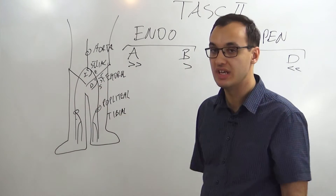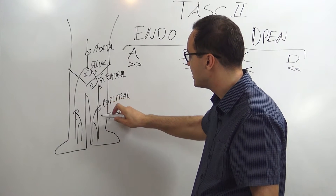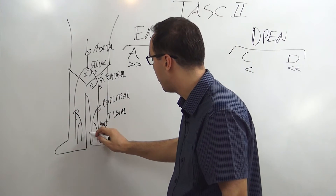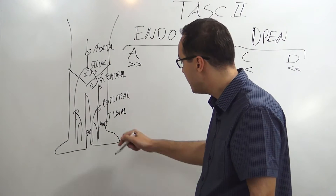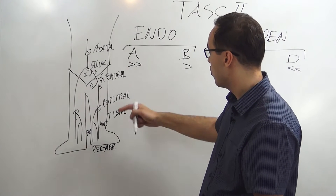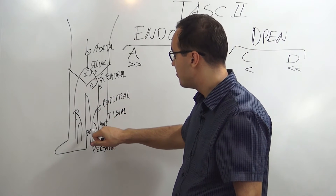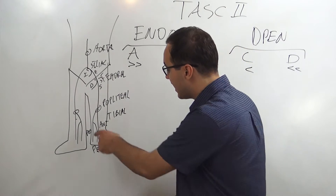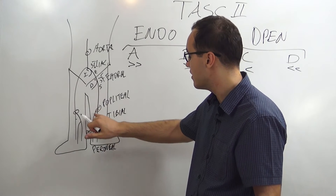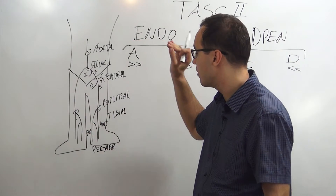The key difference between iliac and femoral naming is that instead of internal and external as in the iliac, the femoral has deep and superficial. Then coming down to the popliteal artery in the knee region, it branches into the anterior tibial at the front, the posterior tibial at the back, and in between a small vessel called the peroneal artery.